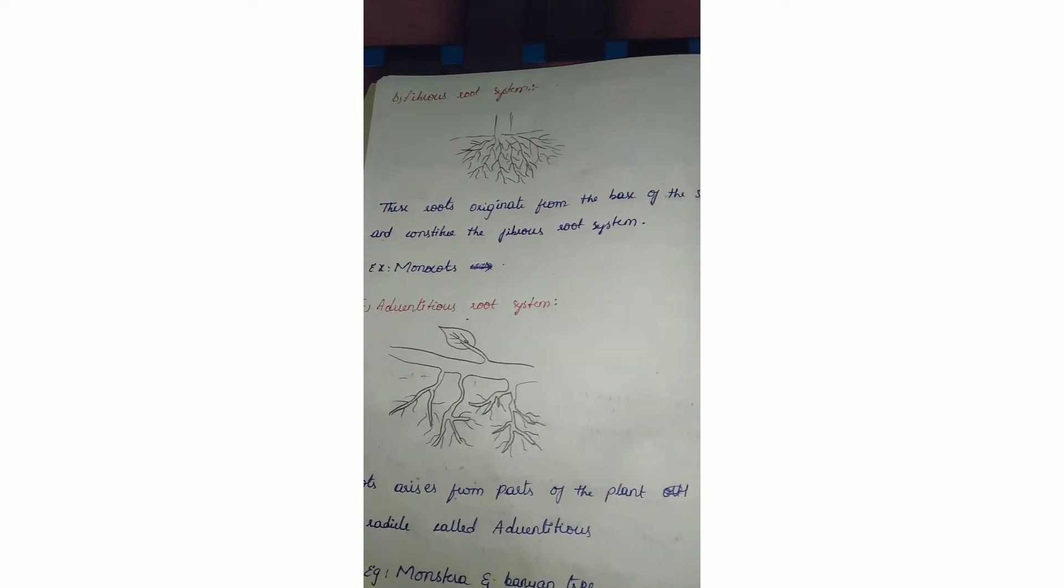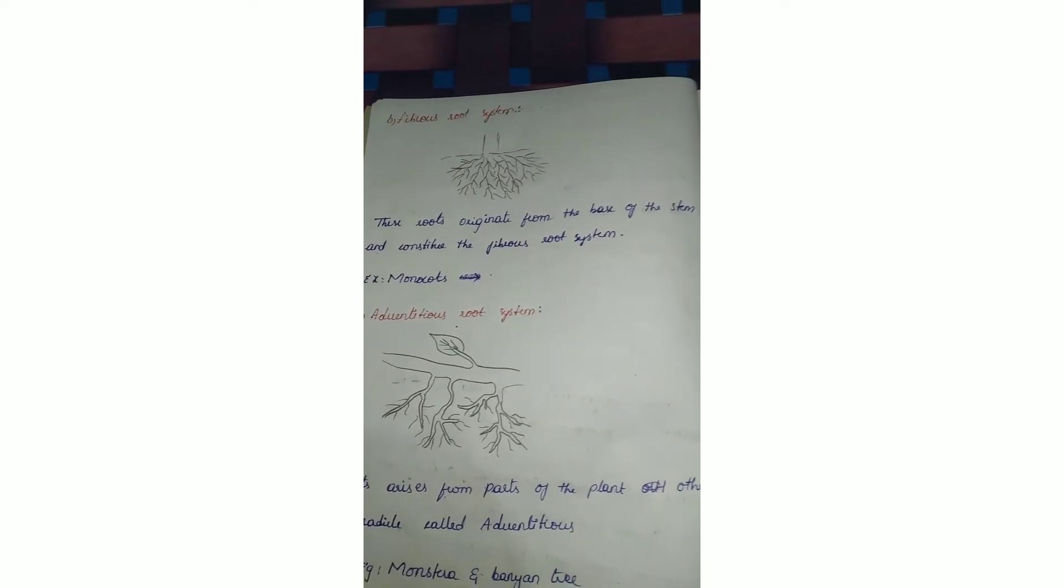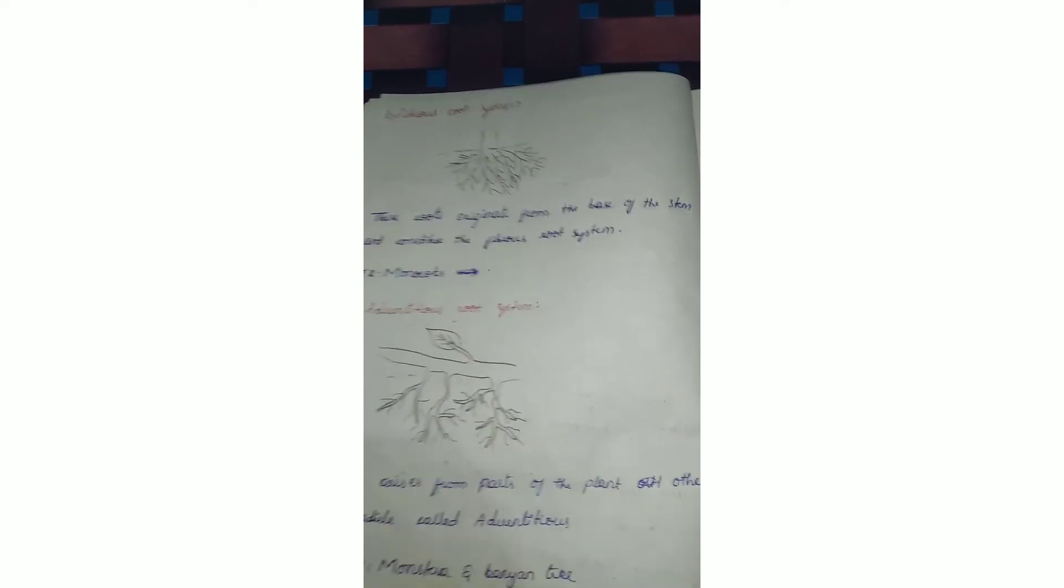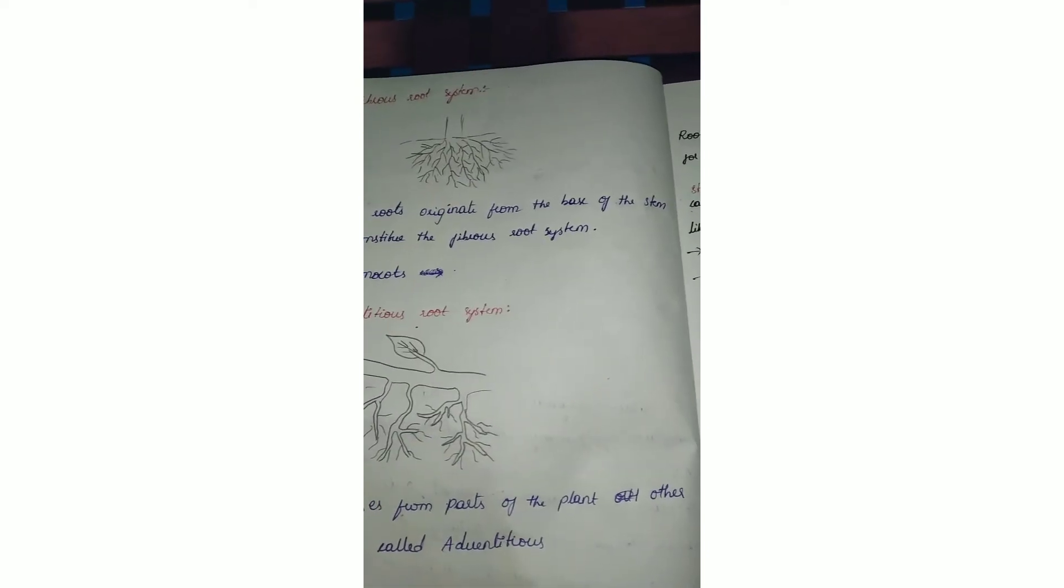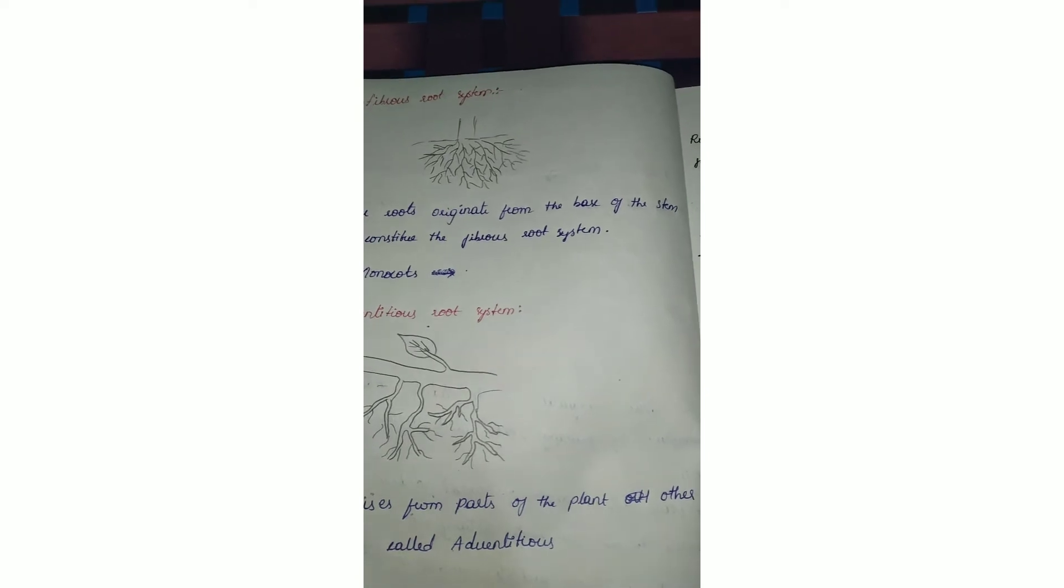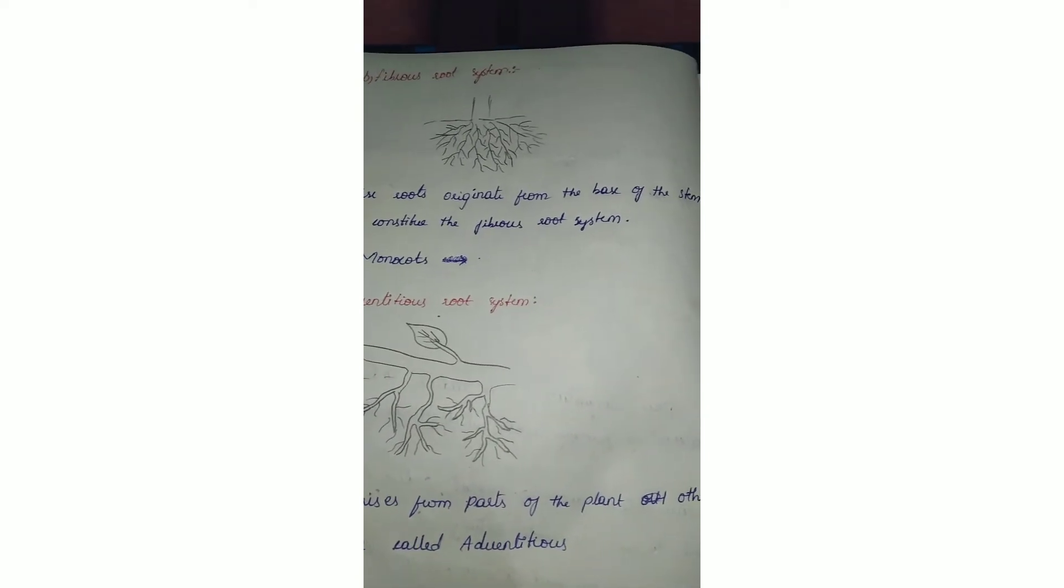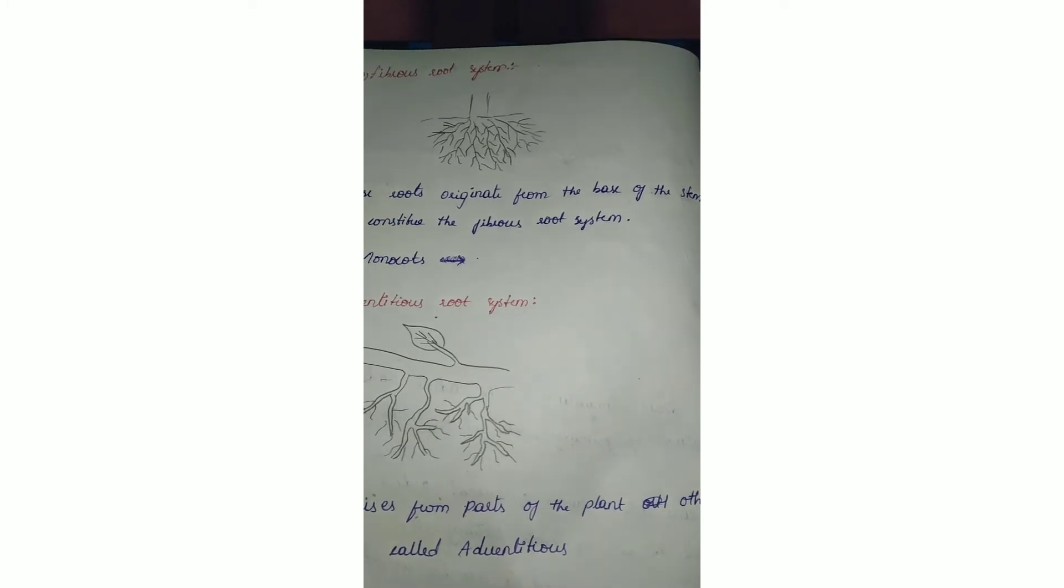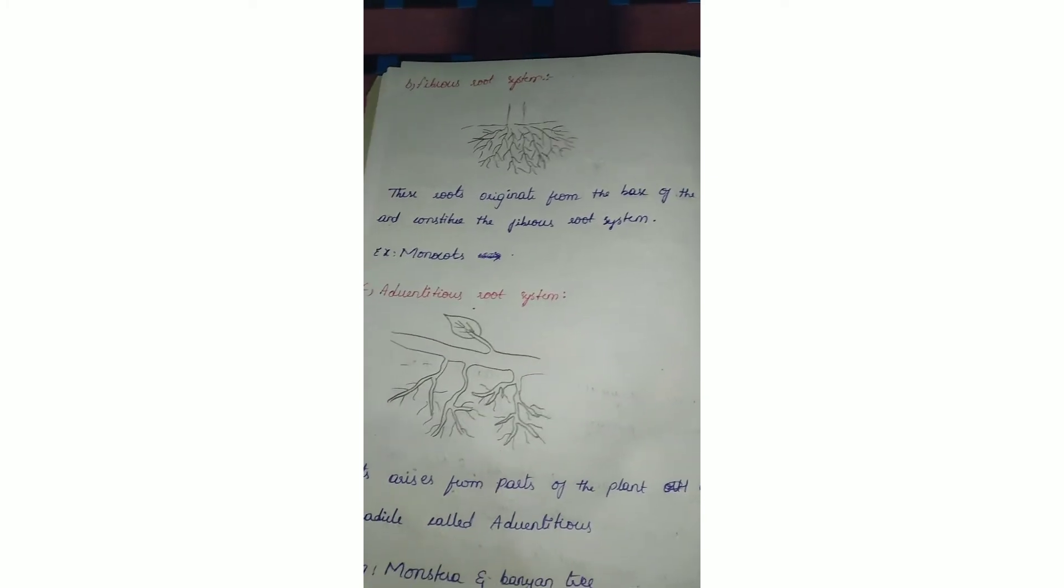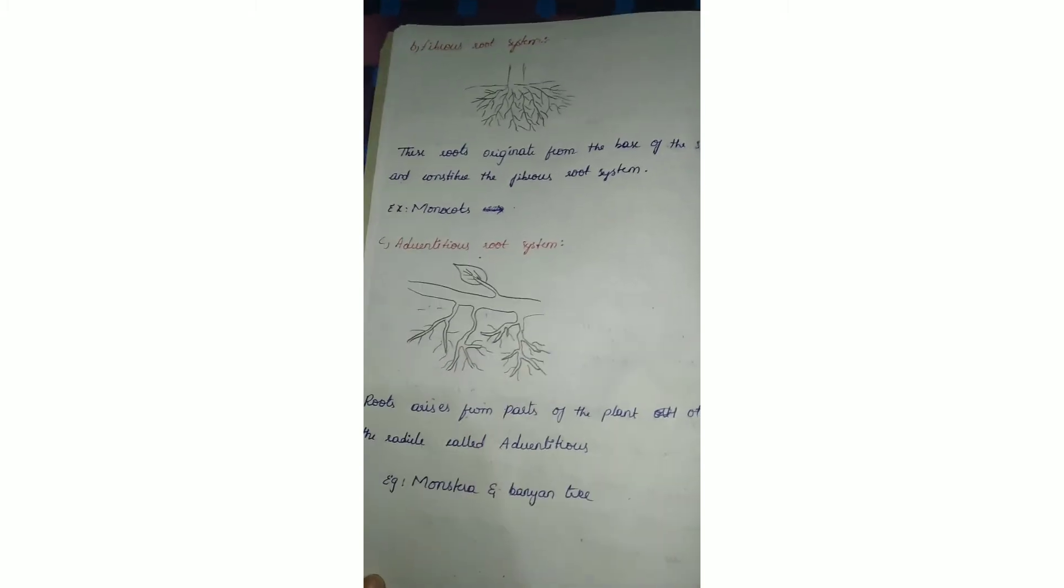These roots originate from the base of the stem and constitute fibrous root system. Fibrous means it's like a bunch of roots, all arising from the main axis. Example is monocots.